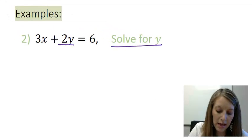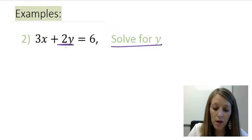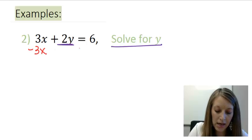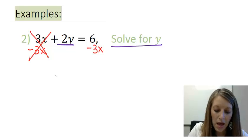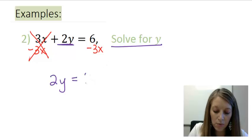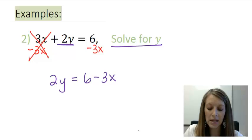Okay, so I want to isolate my y variable. So the first thing I need to do is to get rid of this 3x. I add and subtract before I multiply and divide. That gives me 2y is equal to, now I can write this as 6 minus 3x, or I can write it as negative 3x plus 6. It does not matter.